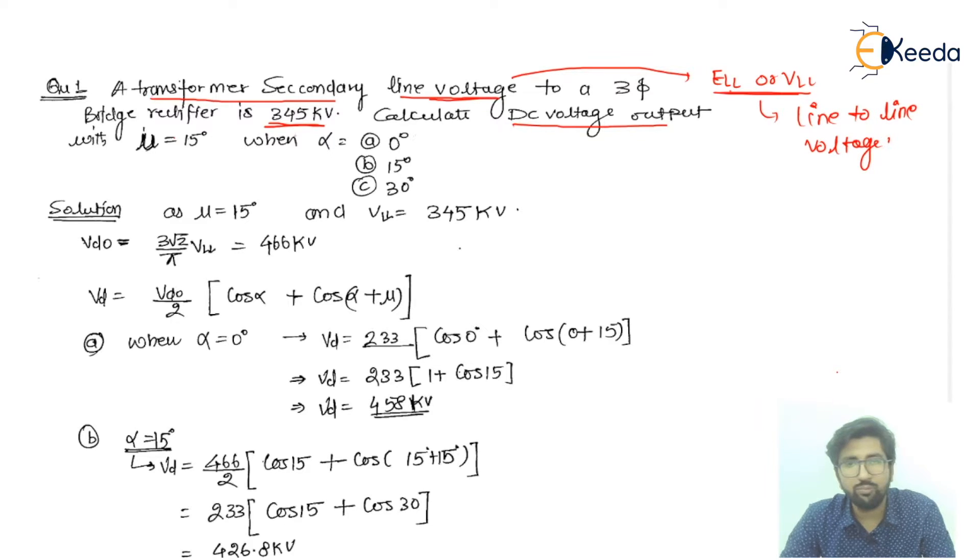Now if I talk about the DC voltage output, that DC voltage output with mu is 15 degrees. So it is interesting because if the mu is equal to 15 degrees, it is lying in the range for the mode. If we talk about the mode, we had three types of mode we discussed: first mode for less than 60 degrees, second mode equal to 60 degrees, and third for greater than 60 degrees. This is the abnormal condition we have discussed.